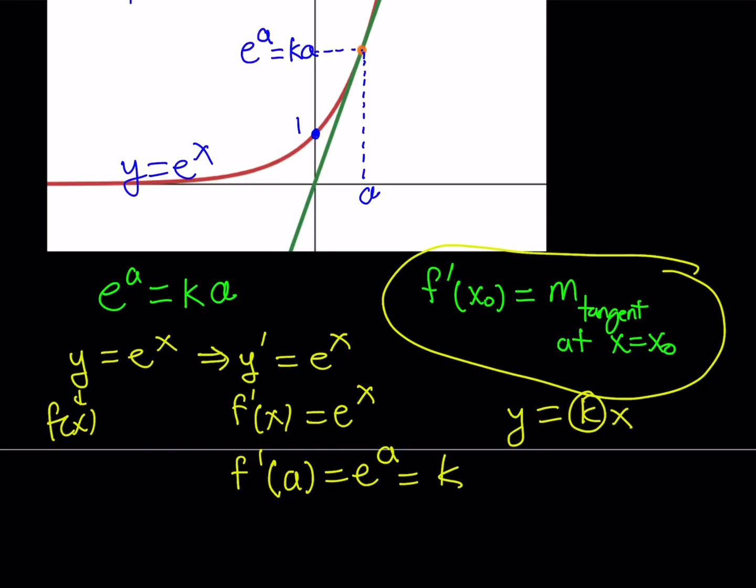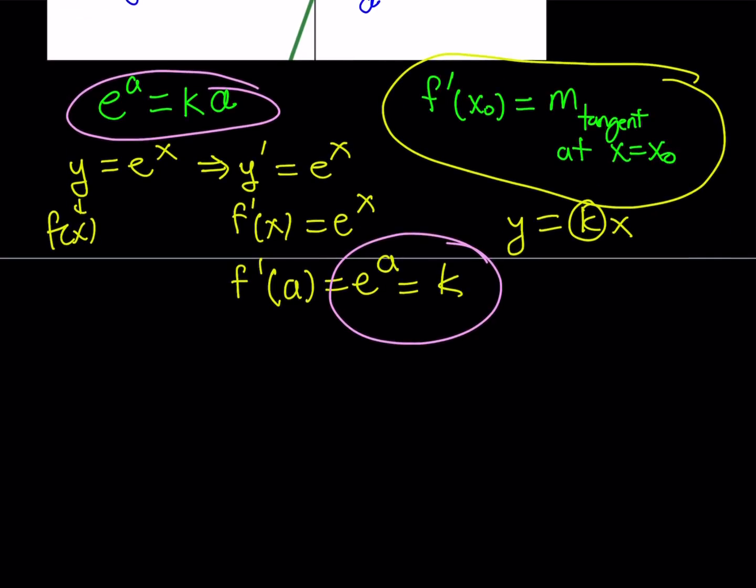That's awesome. By using the derivative at x equals a, we were able to get another equation for a and k. Now we do have two equations. Let's use them together to solve for our x value. e to the power a equals ka, and e to the power a equals k. Let's rewrite them. If the left-hand sides are equal, that means the right-hand sides are also equal. From here, we get that ka is equal to k.